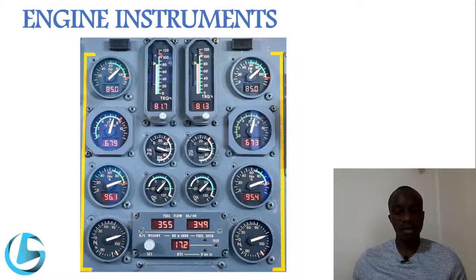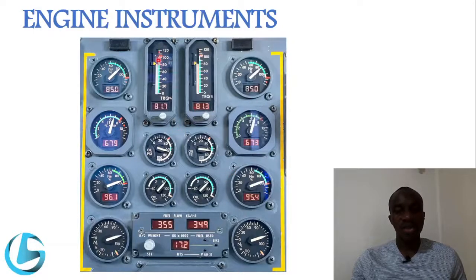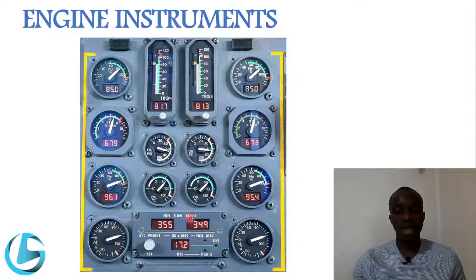Looking at these diagrams for some aircraft, we go through the indicators. This first diagram is for a turbopropeller engine. We have the torque indicator in percentage showing the engine torque, with a green arc indicating the normal operating range and red marks showing limits that cannot be exceeded. We also have the NP propeller RPM indicator, the Exhaust Gas Temperature or ITT, the NH high pressure compressor speed, the low pressure compressor speed, the oil pressure indicator, the oil temperature indicator, and the fuel flow in kilograms per hour.